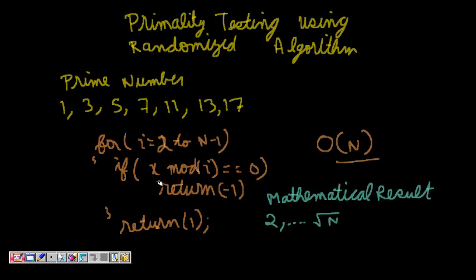Now what will happen? Here the code will only change, n minus 1 instead of this, what I will do now? I will write, I will have something like root n and integer part of it. So it will be from 2 to root n, so now also the order is O of root n.